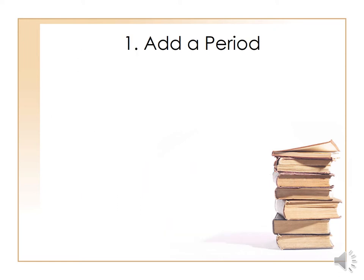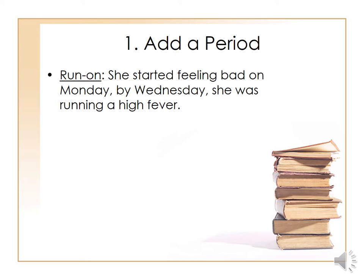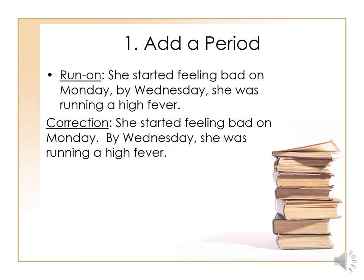The first way to correct a run-on is to add a period. For example: 'She started feeling bad on Monday. By Wednesday, she was running a high fever.' We put a period to divide the two sentences instead of the comma. If you look at the run-on, it divides two sentences with a comma, which you cannot do. You need to switch to a period — then 'By Wednesday, she was running a high fever' begins a new sentence.